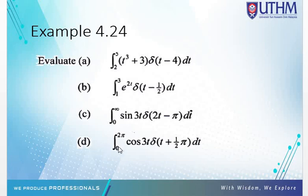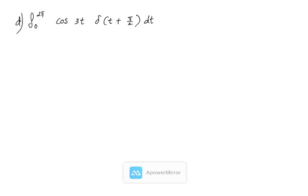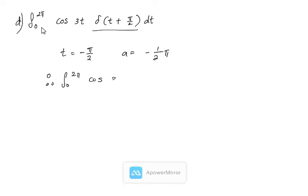The fourth example: the integral from 0 to 2π of cos(3t) delta(t + π/2) dt. Here delta(t + π/2) means the impulse occurs at t equal to minus π/2. So a equals negative π/2, which is not within the range 0 to 2π. Therefore, the integral from 0 to 2π of cos(3t) delta(t + π/2) dt equals 0, because the impulse location is outside the integration limits.